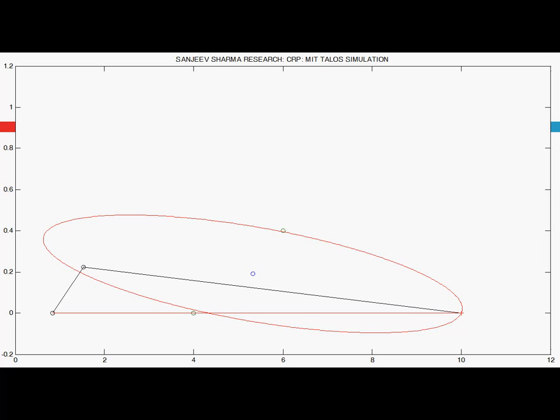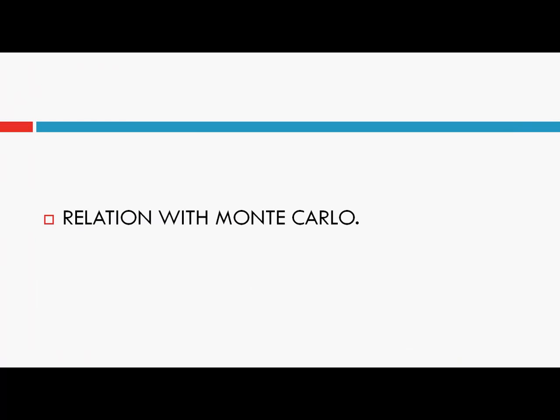Temporal differencing methods can solve path planning problems because they use temporal differences and can learn when a policy is not taking the agent to the target location, allowing them to switch to a different policy. This is a basic difference between Monte Carlo and TD methods. We will see the limitations of Monte Carlo methods, especially in path planning, in a separate path planning channel. That channel will also provide a brief introduction to the convex reinforcement learning path planning algorithm shown in this lecture, and will devote 10 to 15 presentations to this problem.